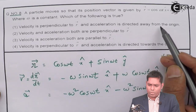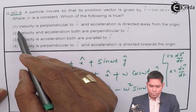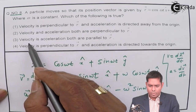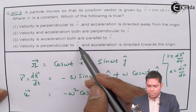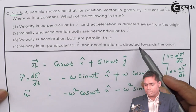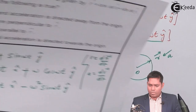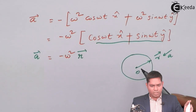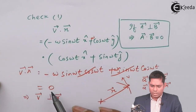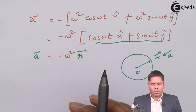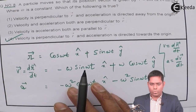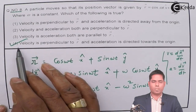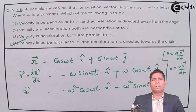So acceleration is directed towards the origin — not away — so option A is not true. Option B: velocity and acceleration both perpendicular — no, that is not correct. Option D: velocity is perpendicular to r, and acceleration is directed towards the origin — that is correct. So the right answer to this question is option number 4. Thank you.